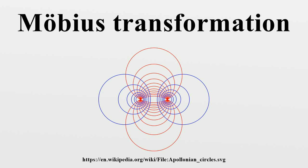An observer who accelerates to relativistic velocities will see the pattern of constellations as seen near the Earth continuously transform according to infinitesimal Möbius transformations. This observation is often taken as the starting point of twistor theory. Certain subgroups of the Möbius group form the automorphism groups of the other simply connected Riemann surfaces. The fundamental group of every Riemann surface is a discrete subgroup of the Möbius group. A particularly important discrete subgroup is the modular group, which is central to the theory of many fractals, modular forms, and elliptic curves.